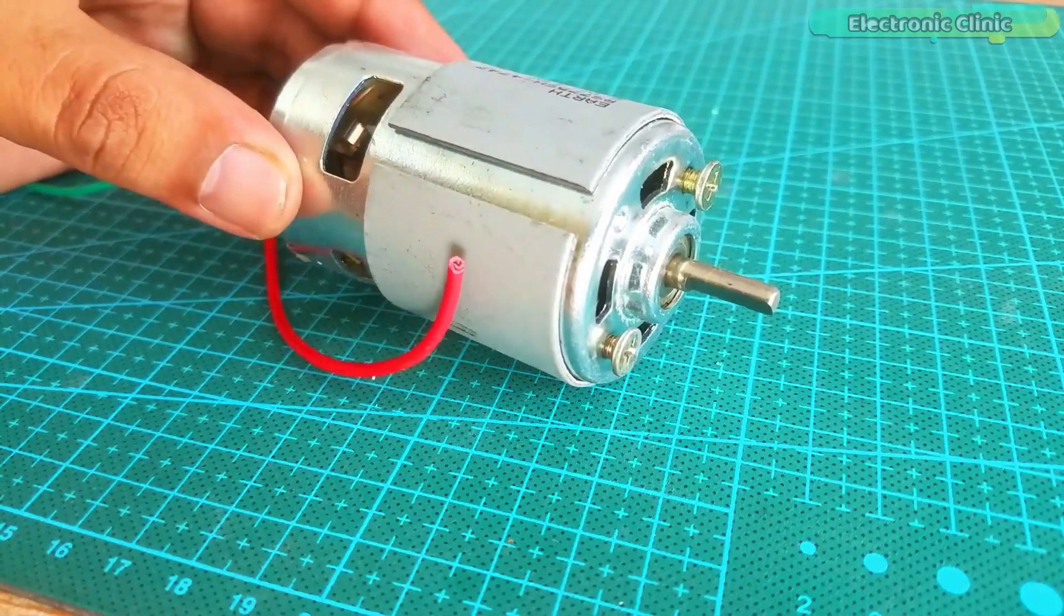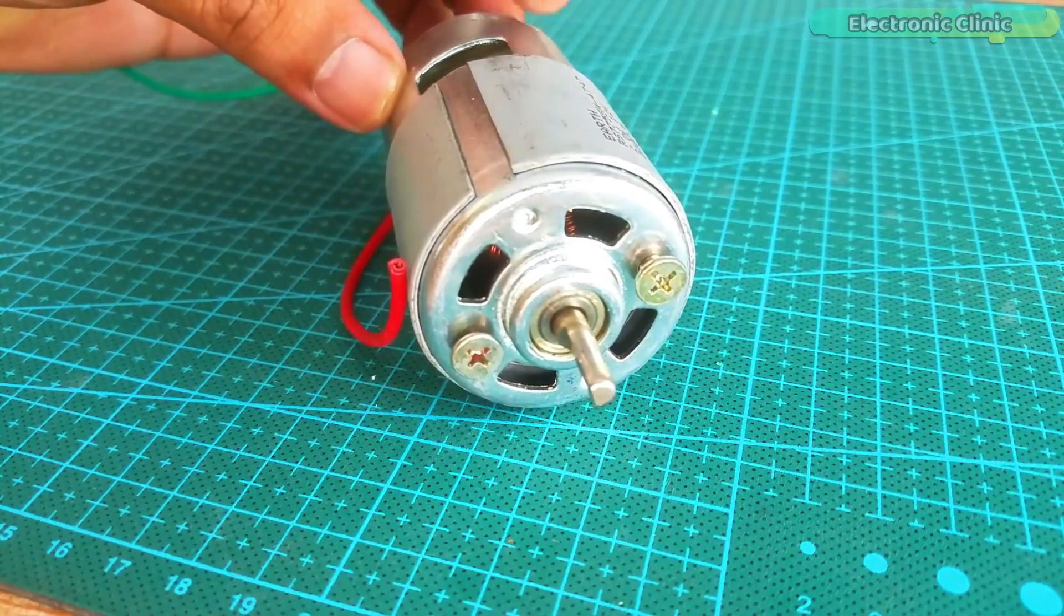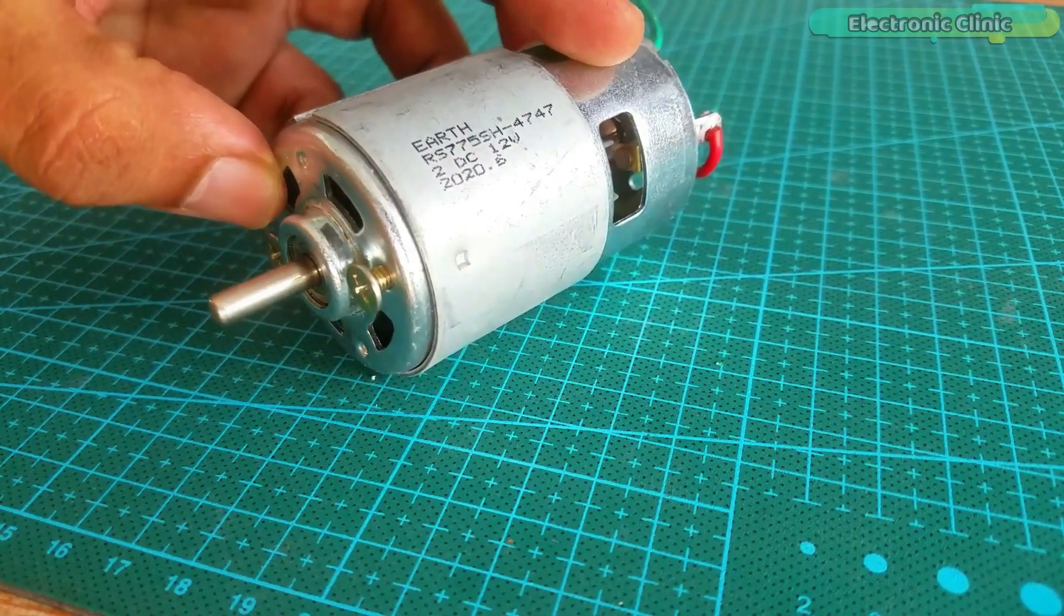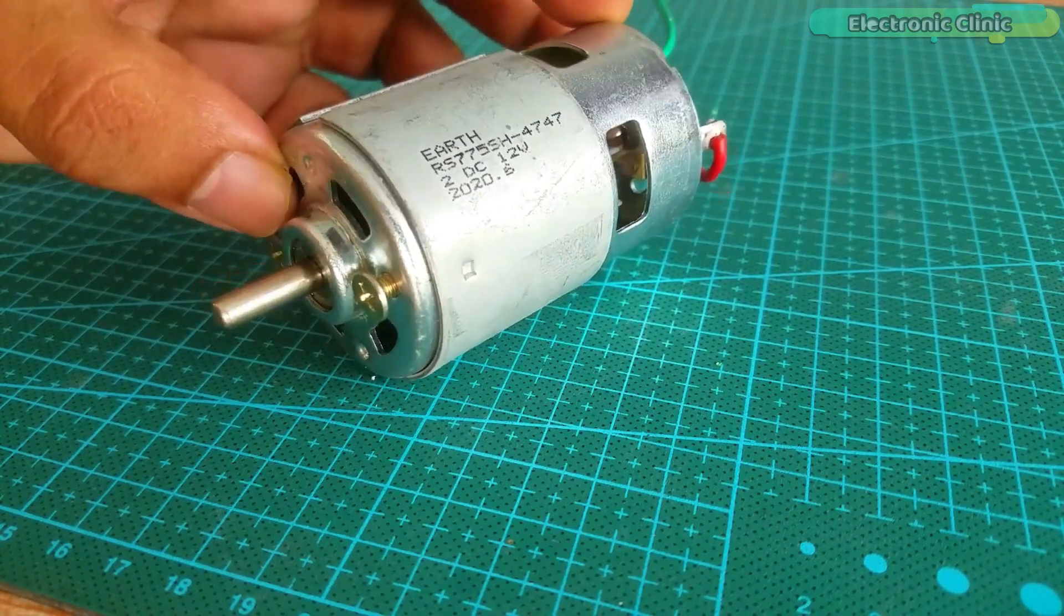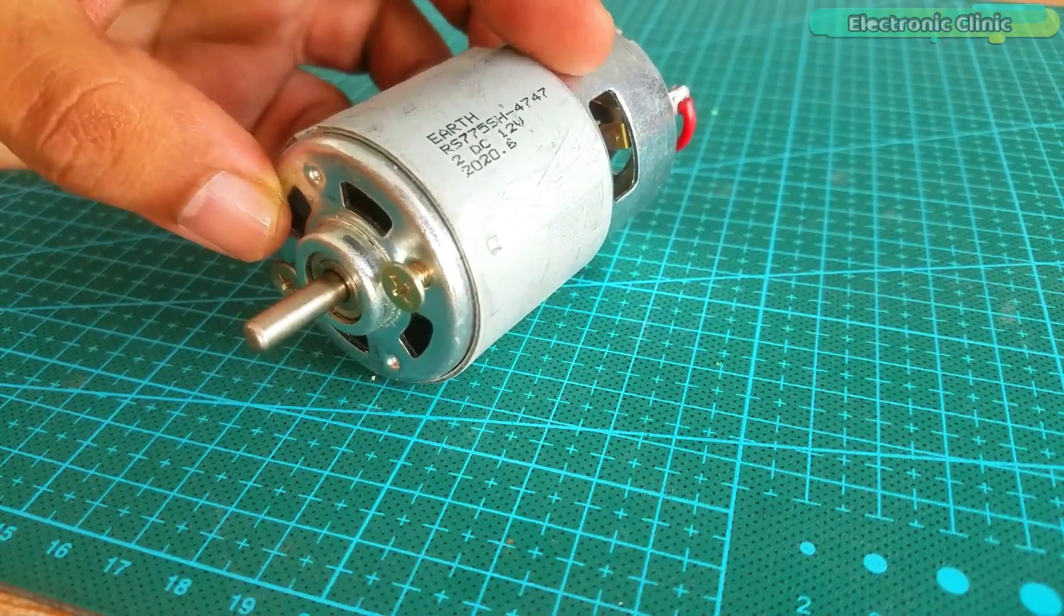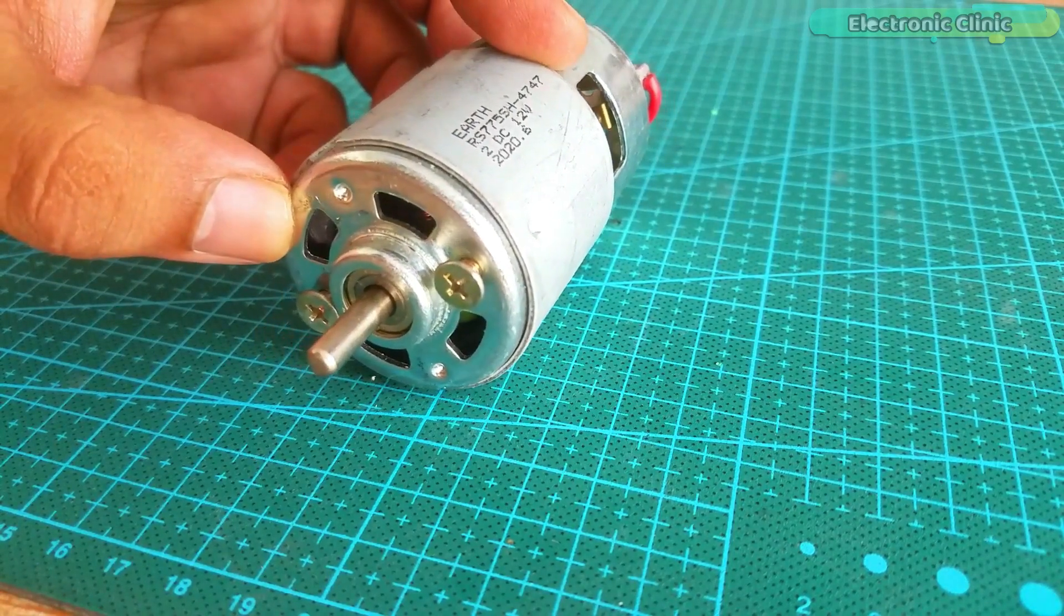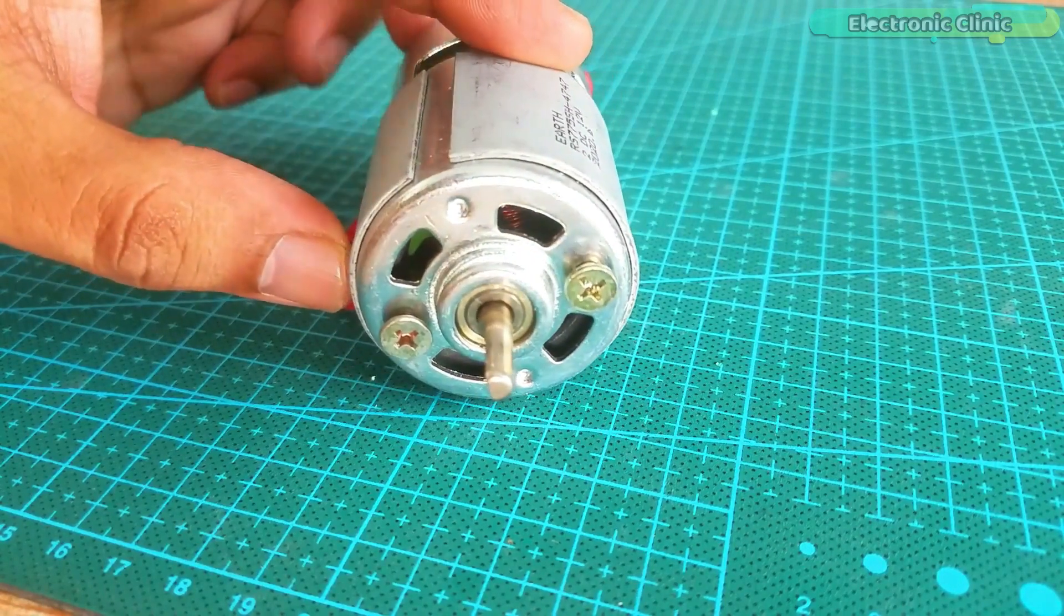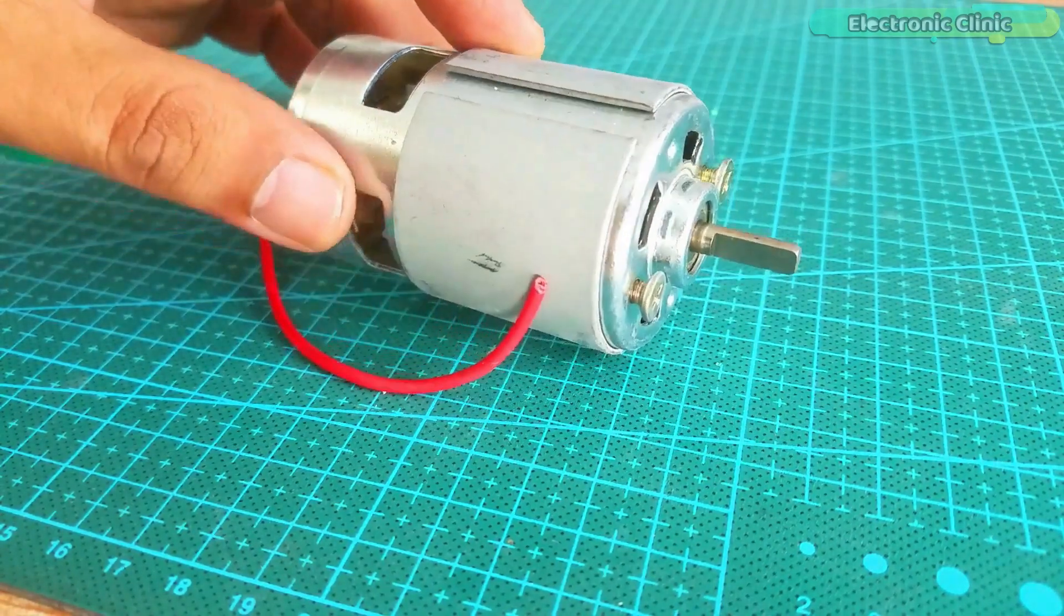This RPM depends on the supplied voltage. At 12 volt DC, current is 0.14 ampere and speed is 3500 RPM. At 18 volt DC, current is 0.15 ampere and speed is 4500 RPM. At 24 volt DC, current is 0.16 ampere and speed is 7000 RPM.